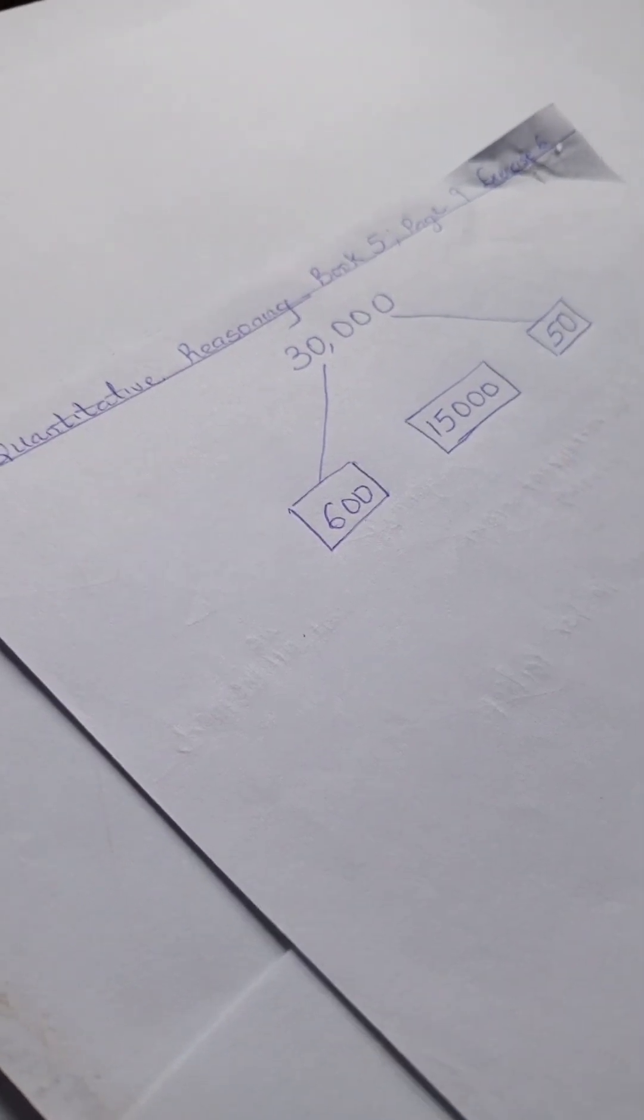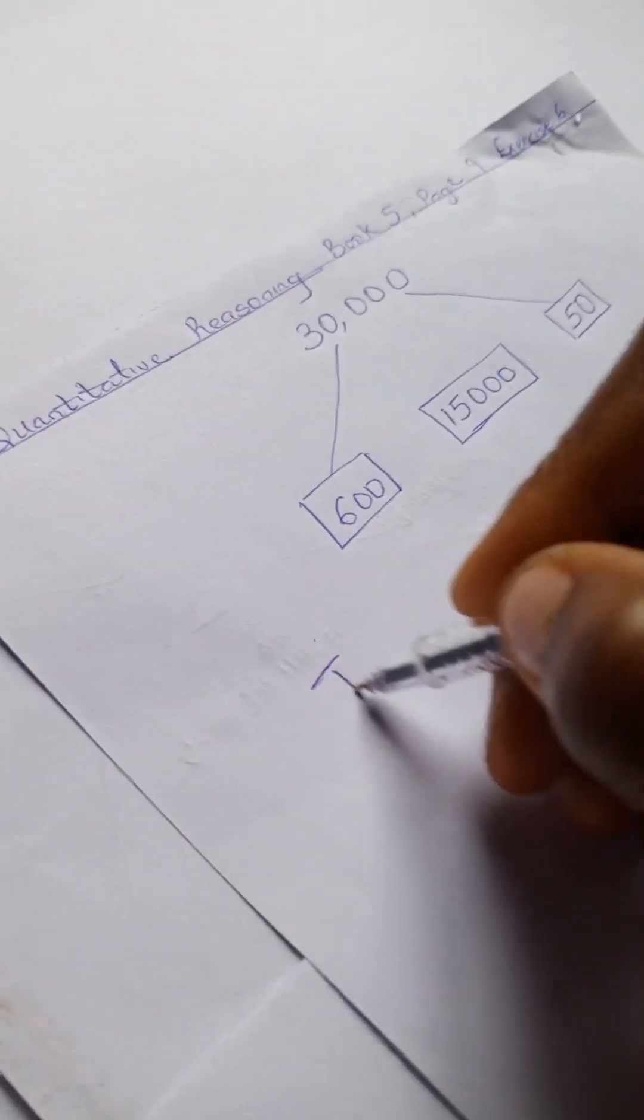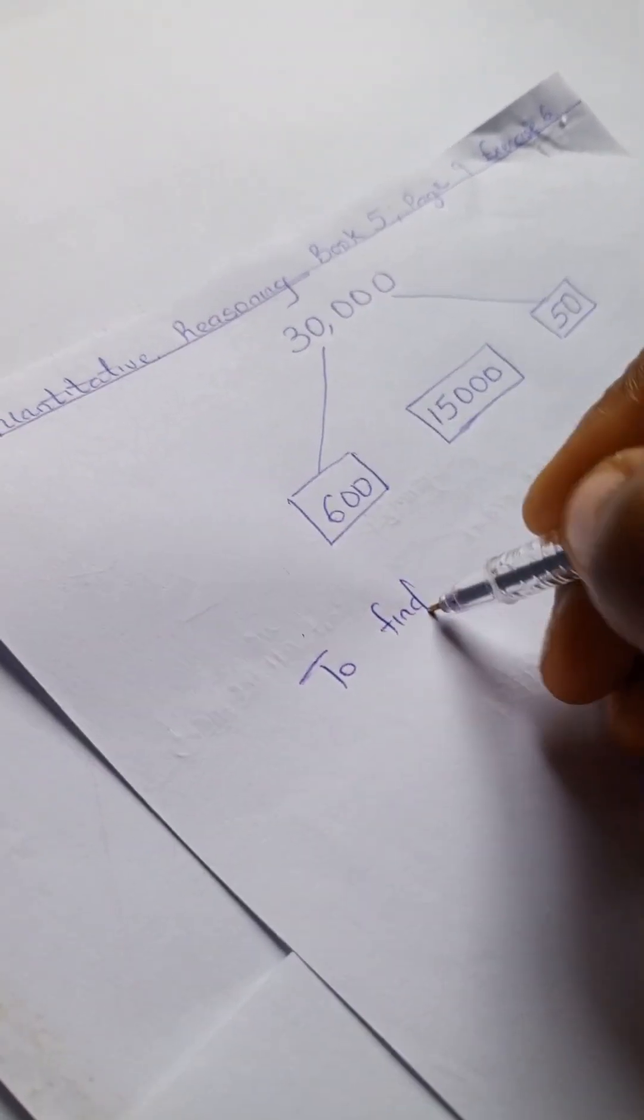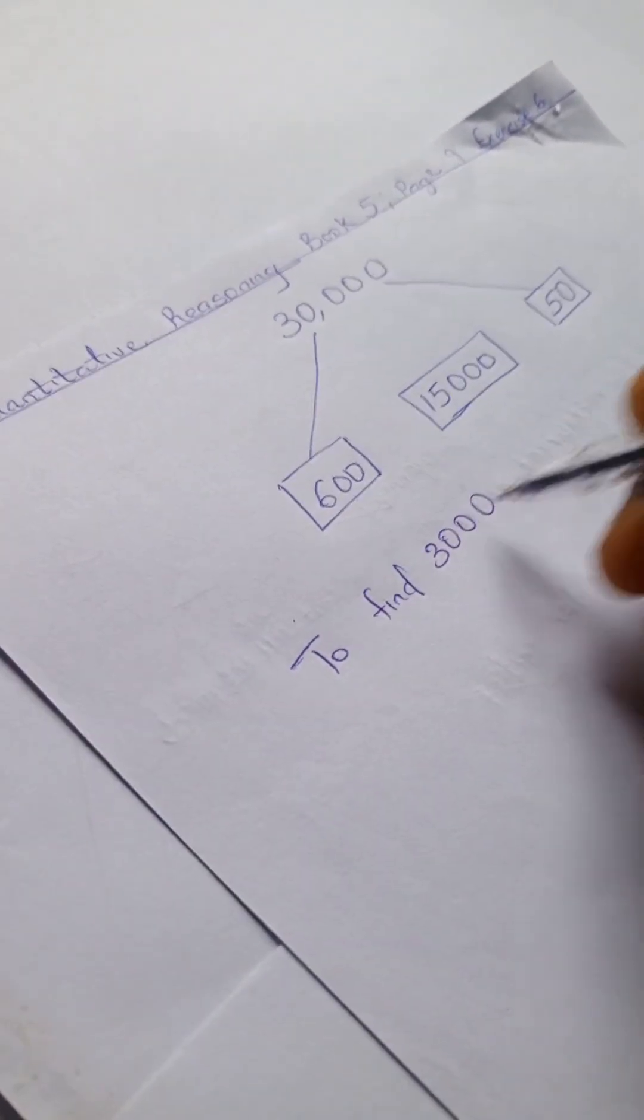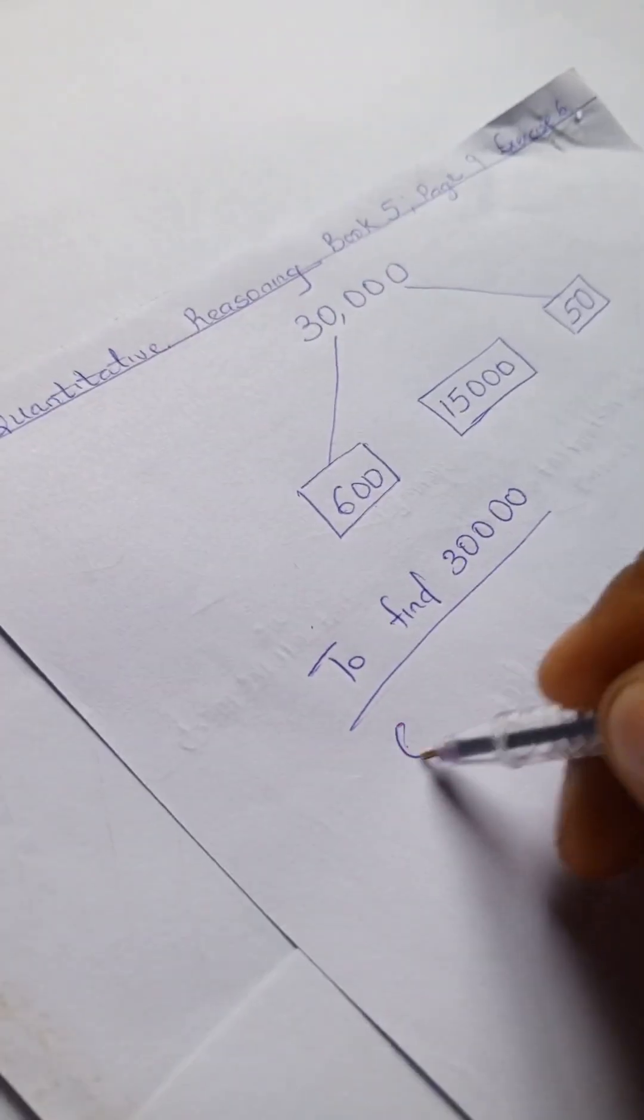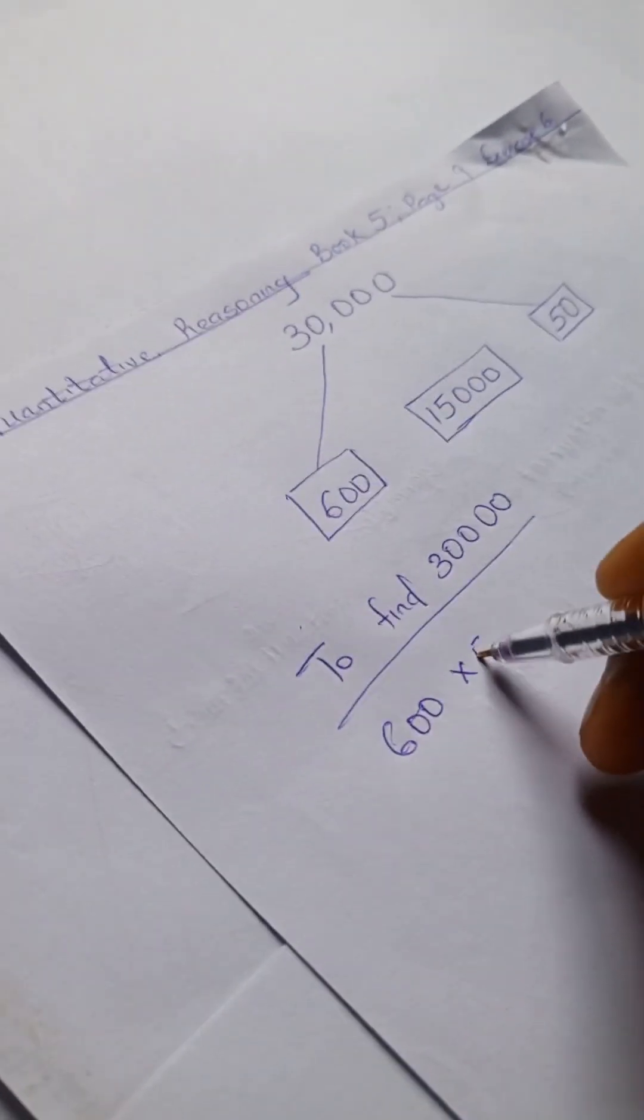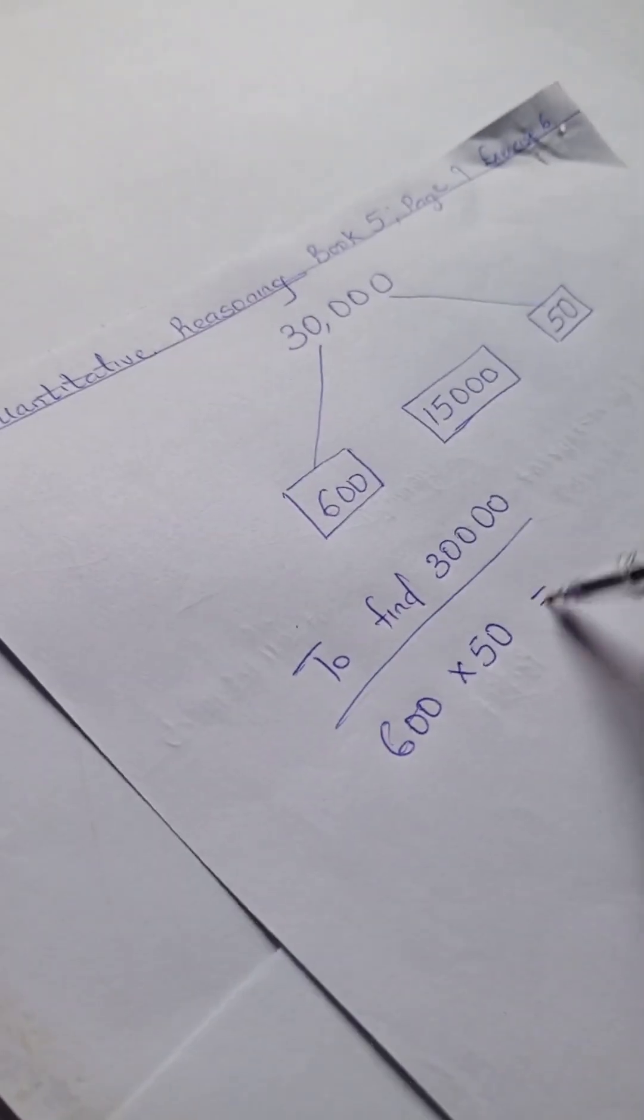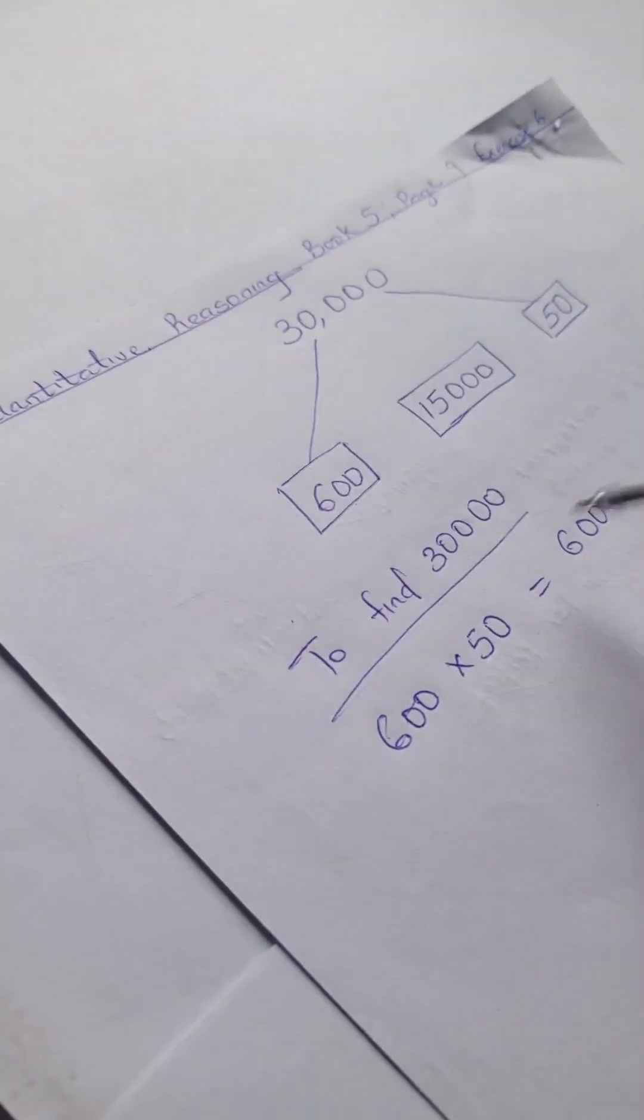Here we have 30,000, 6 hundred, 15,000, and 50. We're going to solve this. So to find 30,000, we're going to simply have 600 times 50.